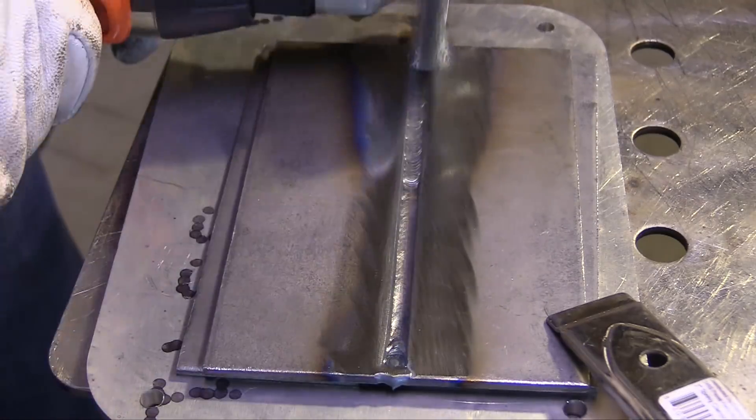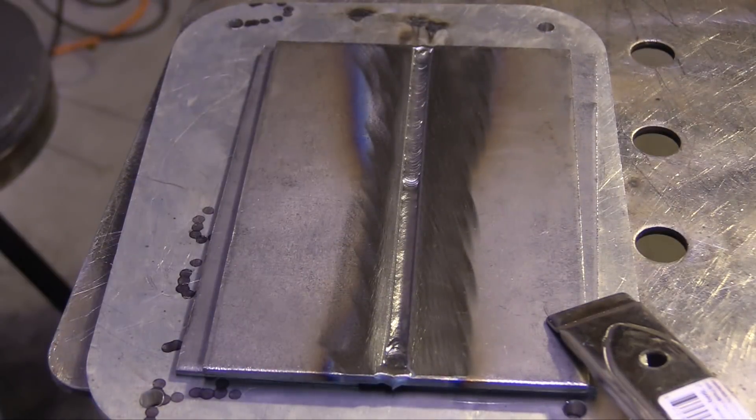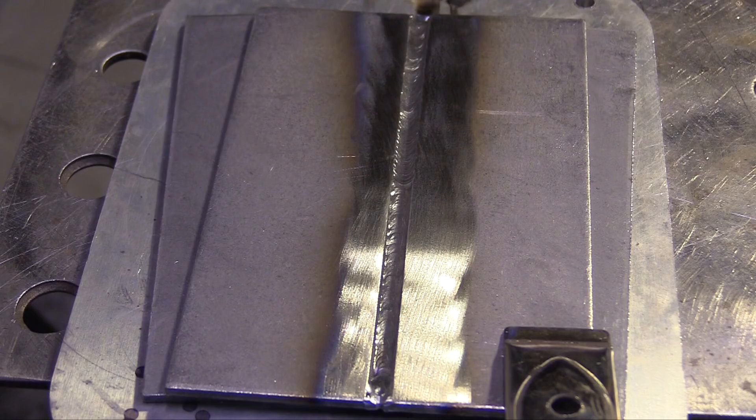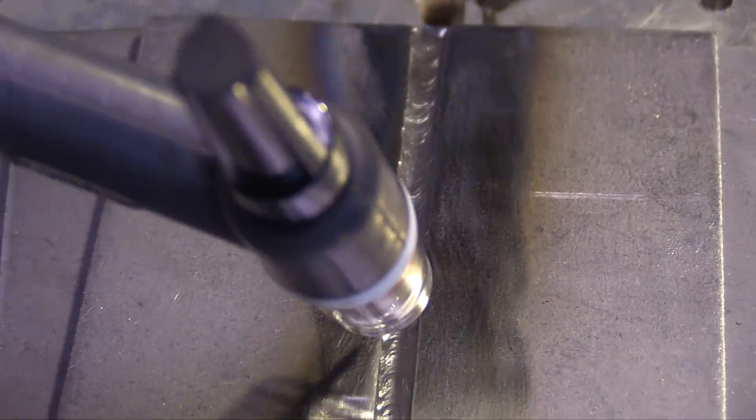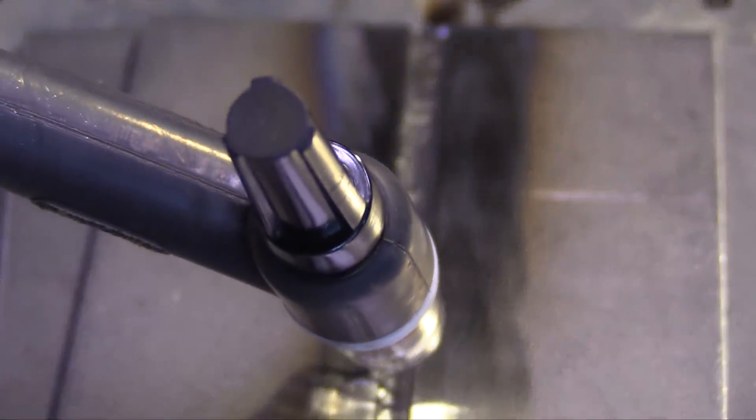For this next pass, the key to not having lack of fusion on a lay wire pass is having it free from oxidation. So a nice hit with a flap disc and a wire wheel, and then we'll be able to lay a 1/8 wire in there and weave right over it and get a little reinforcement and not get lack of fusion. At least that's the goal anyway.